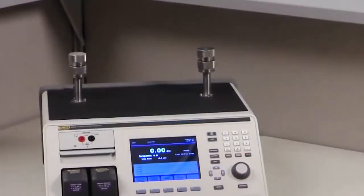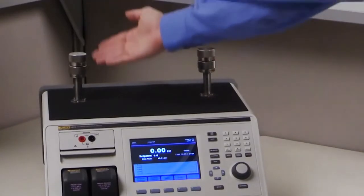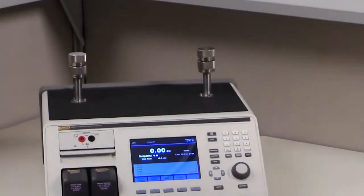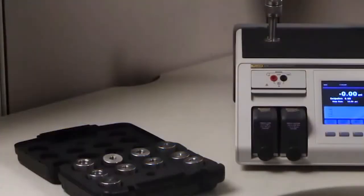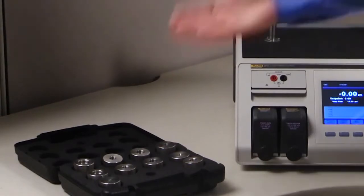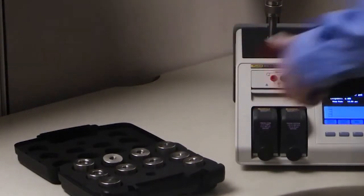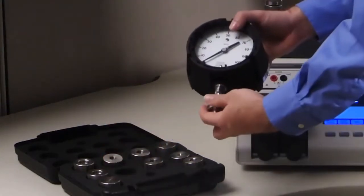To test a pressure gauge, connect it to one of the two vertical test ports on top of the 2271A. The 2271A comes with a number of adapters to connect to common NPT, BSP, and metric sizes.